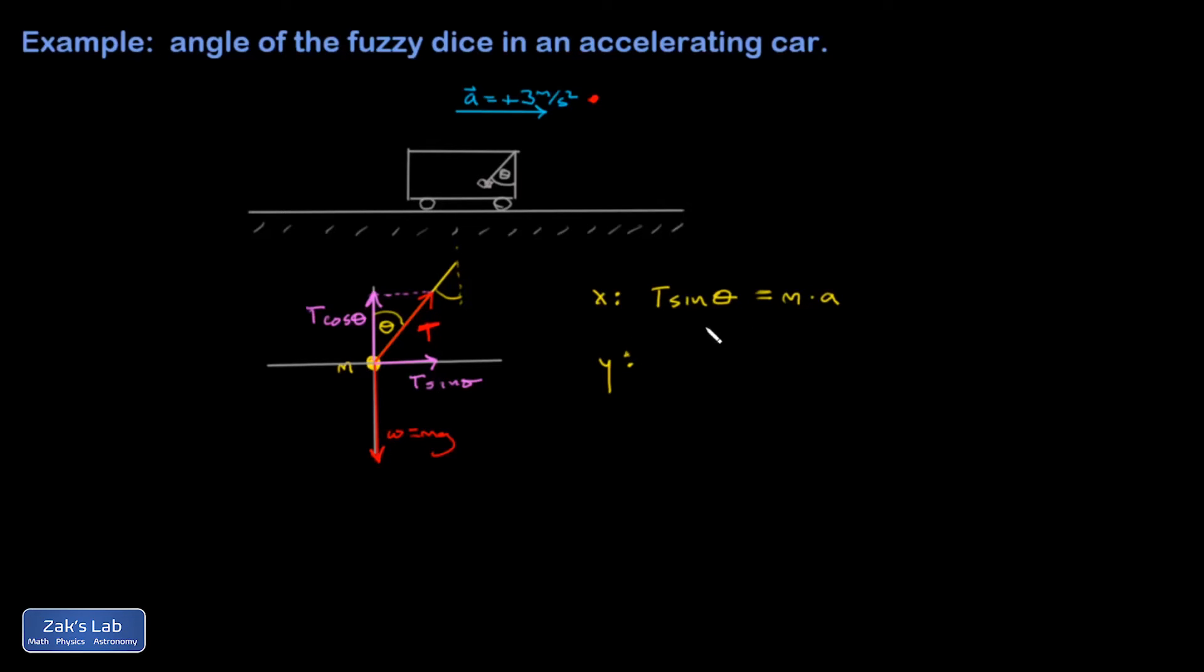The y analysis. I have no acceleration in the y direction, so I'm just going to say all the upward stuff has to add up to the same number as the downward stuff. So I have T cosine theta equals mg.